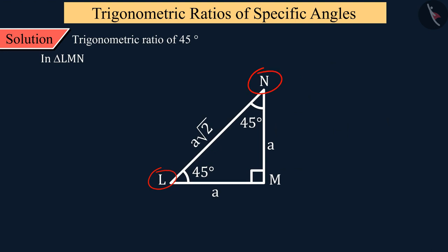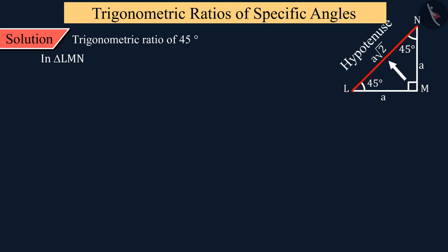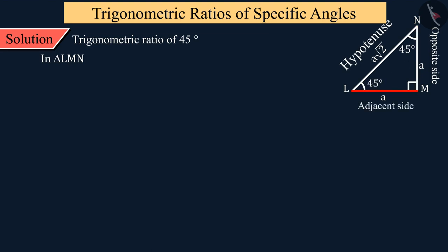In this triangle, the values of both angles L and N are 45 degrees. Here we discuss the trigonometric ratios for angle L in triangle LMN. The side opposite to the right angle is the hypotenuse LN, the opposite side of angle L is MN, and the adjacent side is LM.